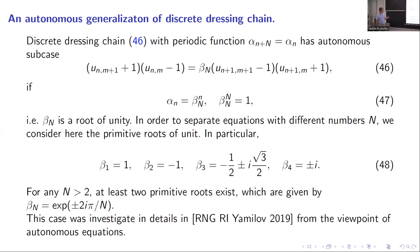And in this case, the situation with generalized symmetries remains the same. So if beta_N capital is equal to minus one, beta_n is equal to one of these; or beta_n is equal to one of these; or beta_n is equal to one of these. And for any other N capital, there exists at least for any of these equations, we can find a generalized symmetry of order N capital.